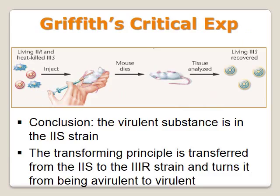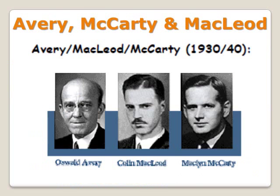Griffith then did a very critical, ingenious experiment: he took the heat-killed smooth strain and mixed it with the living rough strain, and when he injected that mixture into mice, the mice died. When he isolated and cultured bacteria from the tissue of the dead mice, he discovered that the living rough strain had been transformed into the smooth strain. His conclusion was that the transforming principle was passed from the smooth strain to the rough strain, transforming it to become virulent.